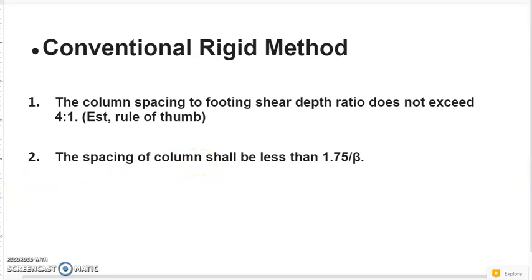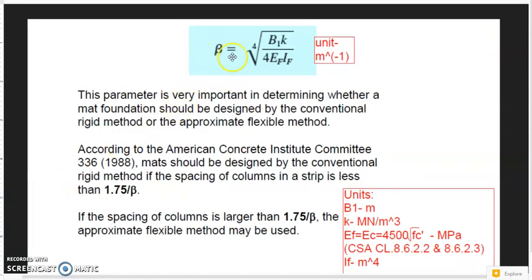So what is the β? Here we can see β is by this equation. There are four components inside this equation. First one is B1. B1 is the width with unit meter of the column grid line width. And K is the soil reaction modulus. EF means foundation elastic modulus.